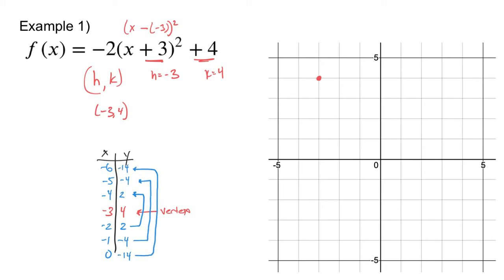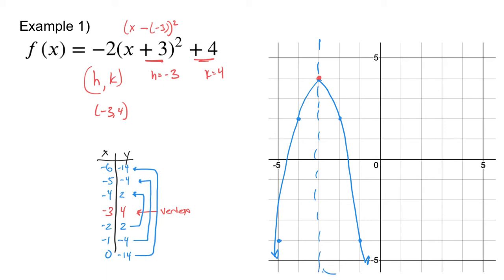Plotting these points gives me an accurate graph — a parabola. The axis of symmetry is at x equals negative 3, and I'm using both the table of values and the axis of symmetry to come up with nice points for my graph.